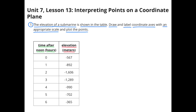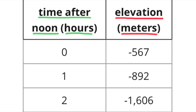Number 1. The elevation of a submarine is shown in the table. Draw and label coordinate axes with an appropriate scale and plot the points. The horizontal axis, or x-axis, will identify the time after noon in hours, and the vertical axis, or y-axis, will represent elevation in meters.